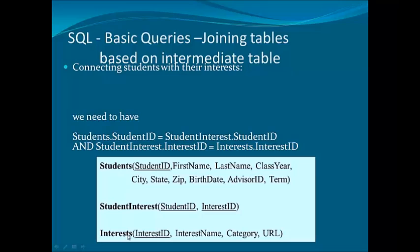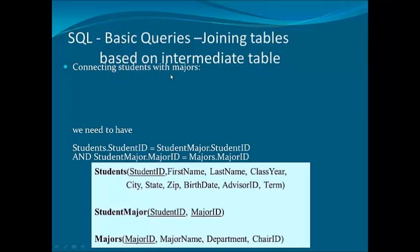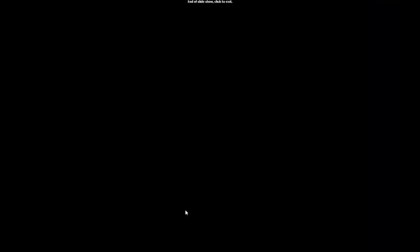Similarly, we connect students with majors. In the student_majors intermediate table you can see student_ID, and in the majors table there is major_ID, so the major_ID should also be present in the intermediate table to link both sides of the relationship.